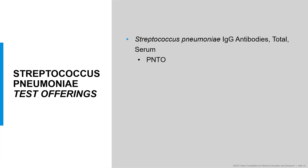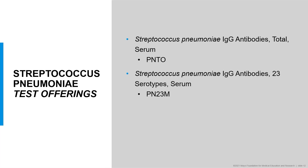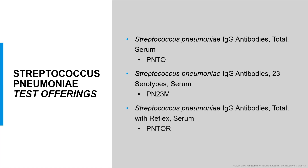Mayo Clinic Laboratories offers three tests which can be used to measure pneumococcal specific antibodies. The first test is Streptococcus pneumonia IgG antibodies total serum with the test code PNTO. The second test is Streptococcus pneumonia IgG antibodies 23 serotype serum with the test code PN23M. The last test is Streptococcus pneumonia IgG antibodies total with reflex serum, also identified as PNTOR.